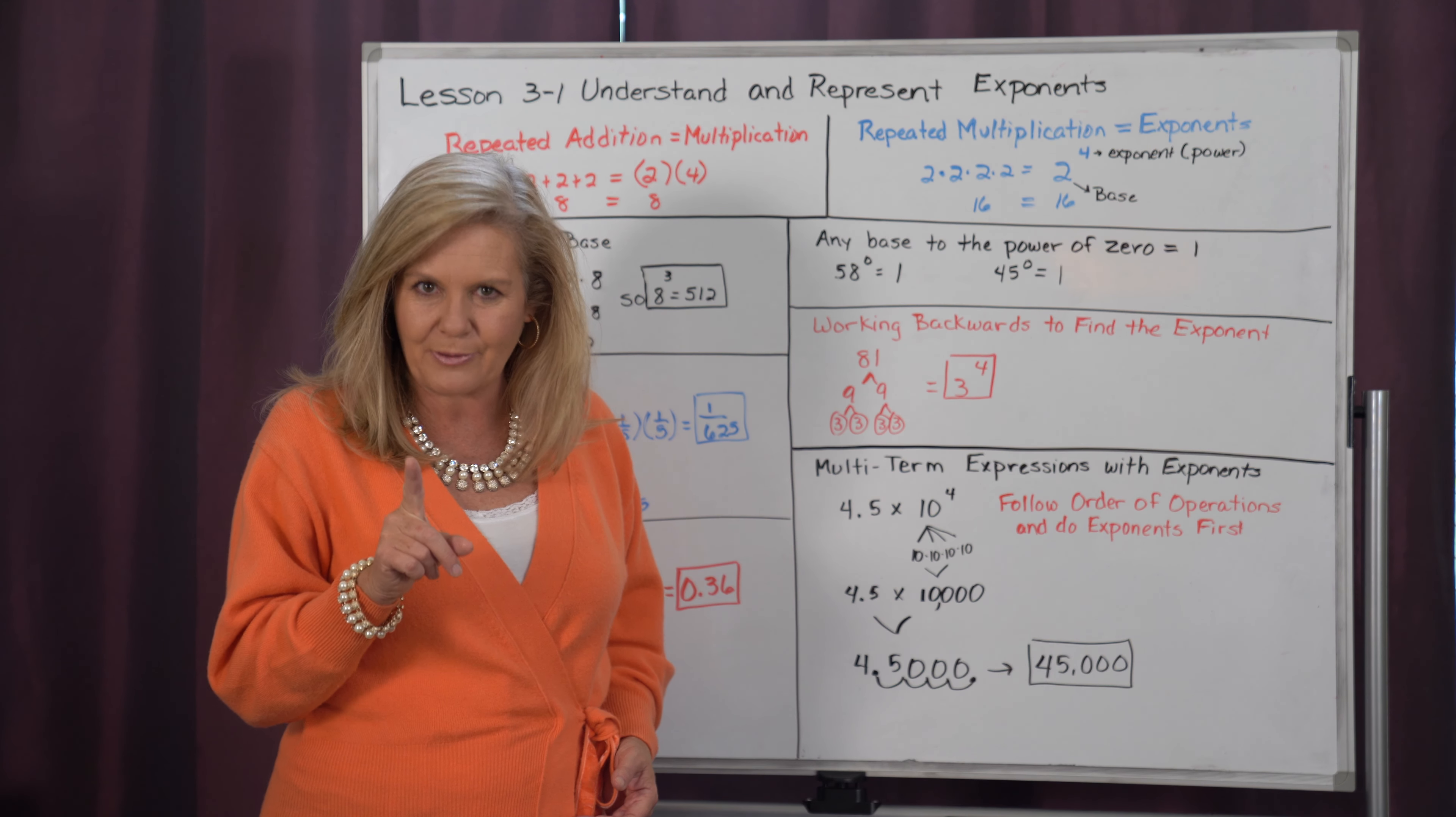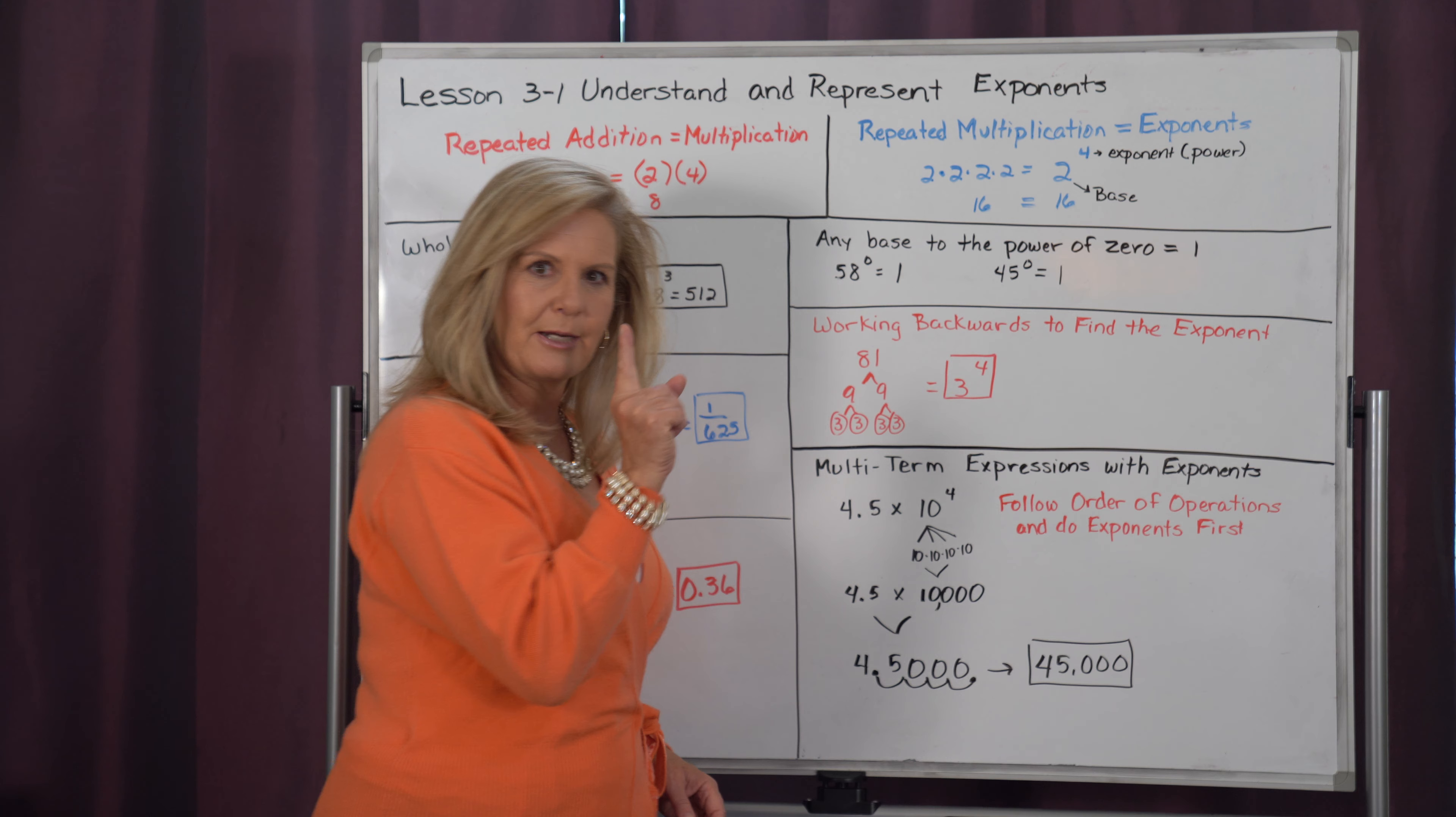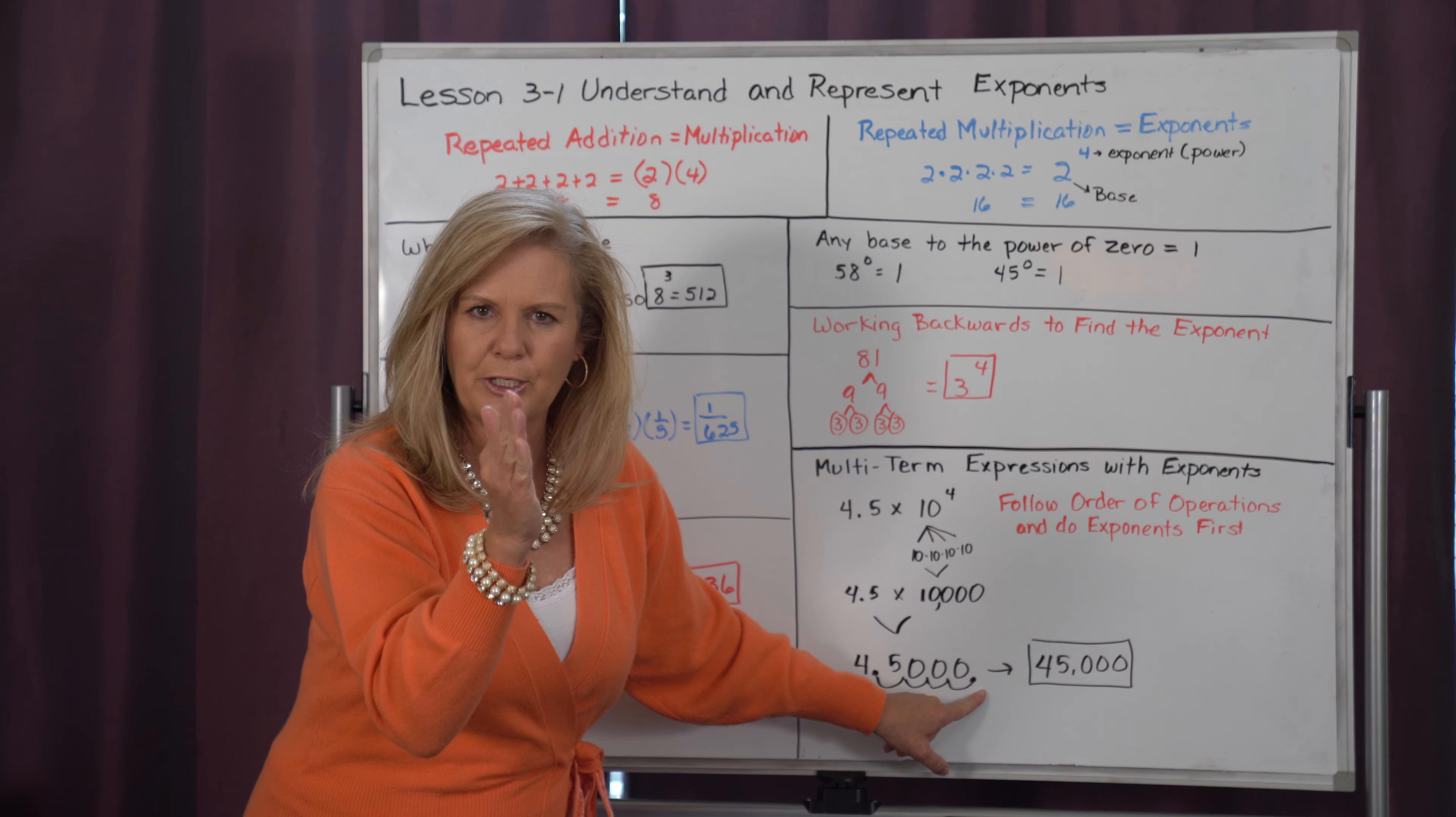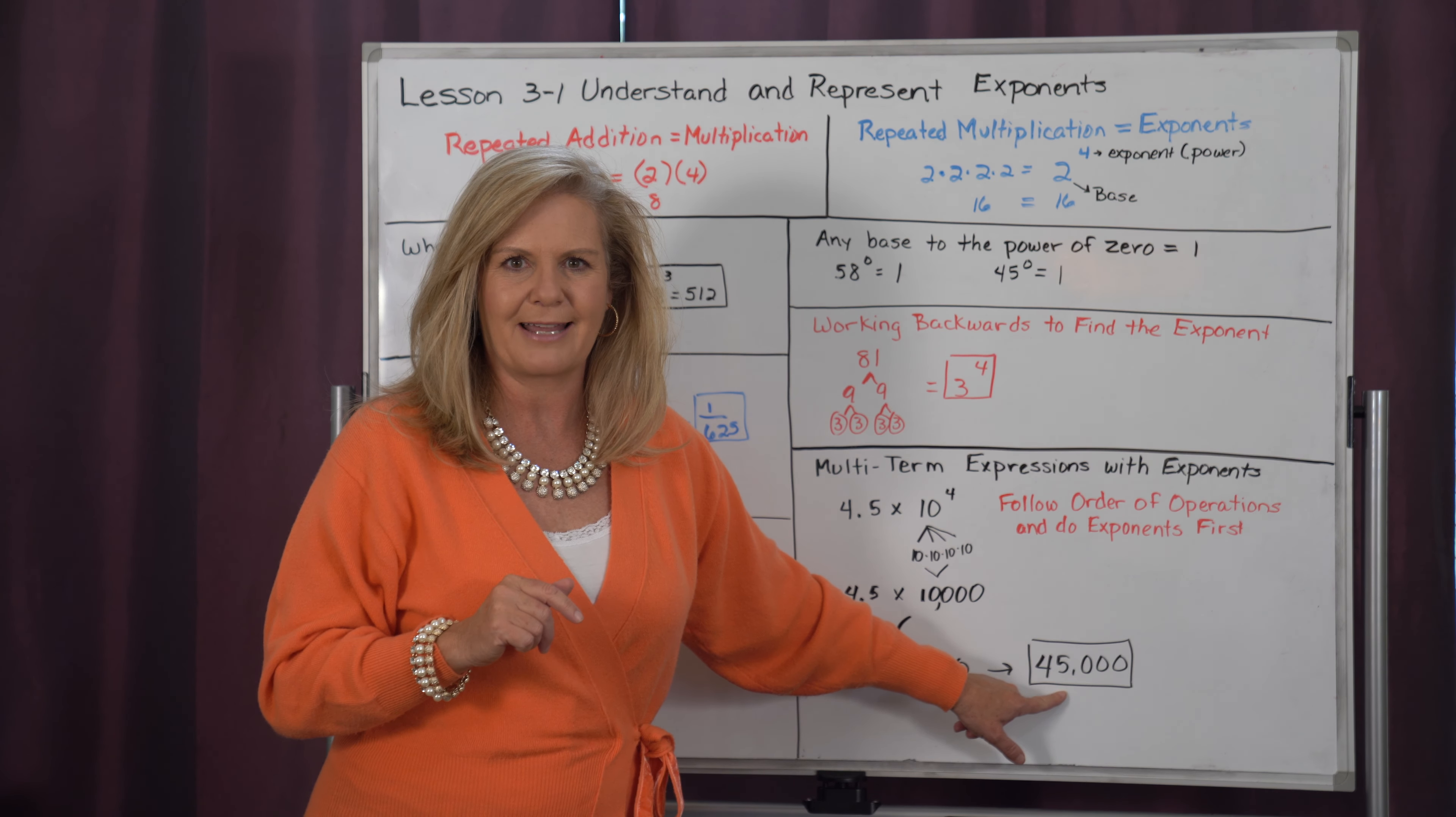Now this is where it's really easy to multiply. Because whenever you multiply by a power of 10, all you have to do is count the number of zeros they have, and you move your decimal point to the right that many places. Because remember, to multiply, our number gets bigger. So I count 1, 2, 3, 4 zeros. So I'm going to start here at my decimal point, and I'm going to move it over once, twice, 3, 4. And where you end up, that's where you put your new decimal point. So in the end, now my decimal point is moved all the way to the end, and I get 45,000. So 4.5 times 10 to the 4th power equals 45,000.